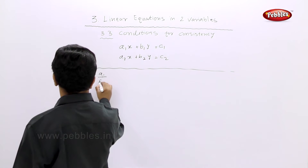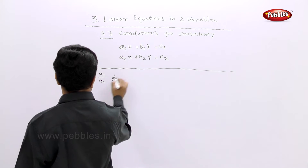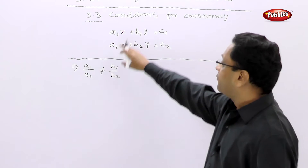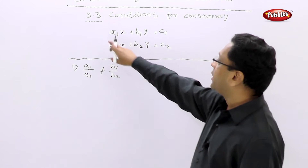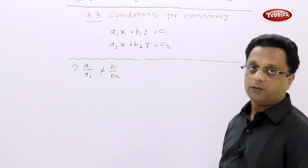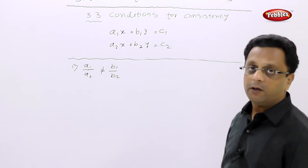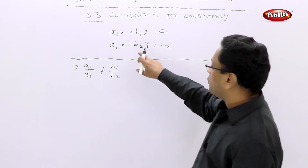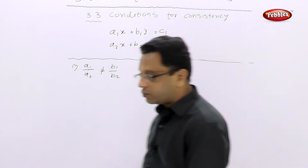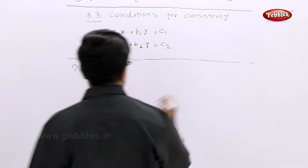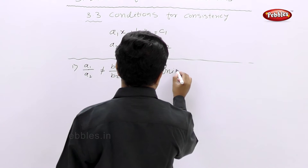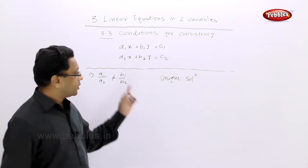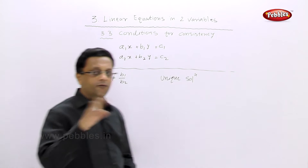The first condition is: if a1 upon a2 is not equal to b1 upon b2. From any two equations you will get a1, a2, b1, b2, c1, c2. Here x and y are variables and all others are constants. If a1 upon a2 is not equal to b1 upon b2, then the solution is unique.